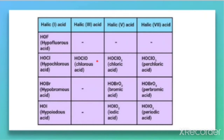For halic-5 acid, chlorine, bromine, and iodine can all form this type, where the oxidation state is +5 — giving chloric acid, bromic acid, and iodic acid. For halic-7 acid, at +7 oxidation state, chlorine forms perchloric acid, bromine forms perbromic acid, and iodine forms periodic acid.